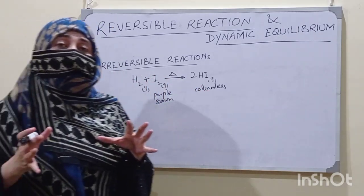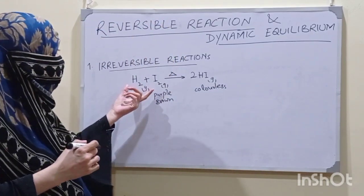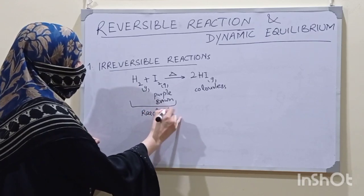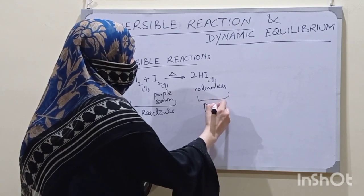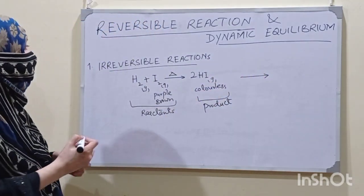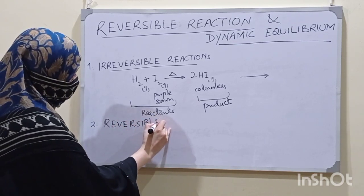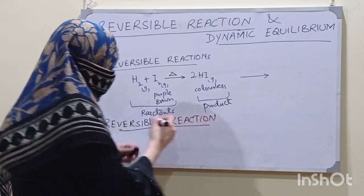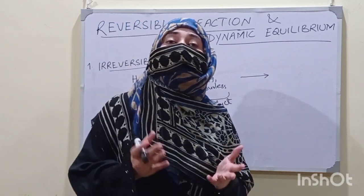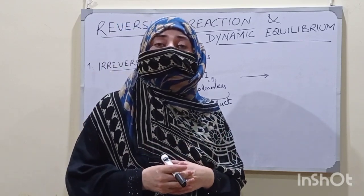But there are certain reactions when conditions are provided where the product is converted back into the reactants. First we have to know about the reactant and product. Those substances which are combined together to make a new substance are called reactants. Hydrogen iodide is a product. The irreversible reaction is always shown by a single arrow. In a reversible reaction, reactants are converted into products, but after some time products are converted back into the reactants, and we cannot attain a final end product of any of the substances. Such reactions are called reversible reactions.